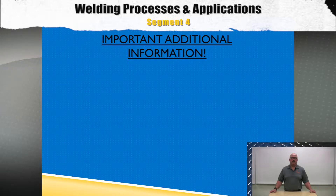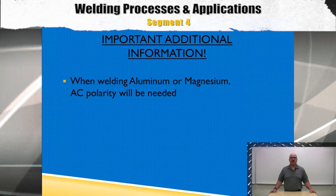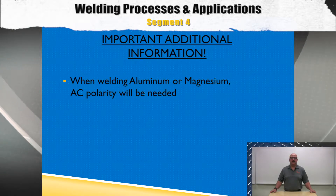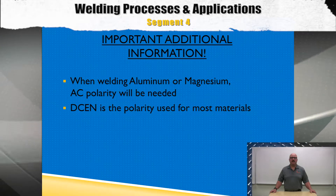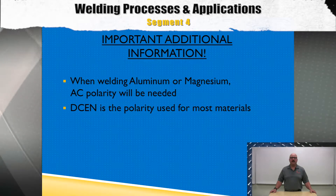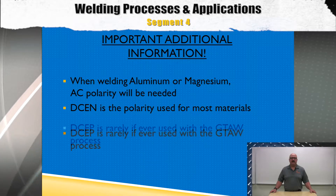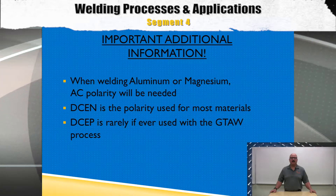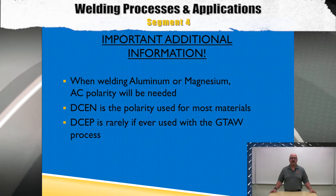Now a few important items about polarity in the GTAW process. When welding aluminum or magnesium, AC polarity will be needed. DCEN, or direct current electrode negative, is a polarity used for most materials. DCEP, or direct current electrode positive, is rarely, if ever, used in the GTAW process.